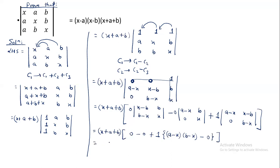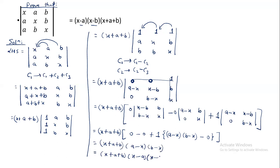So we calculate: x plus a plus b with a minus x and b minus x, and x minus b. Therefore this is equal to the right-hand side. The proof is complete.